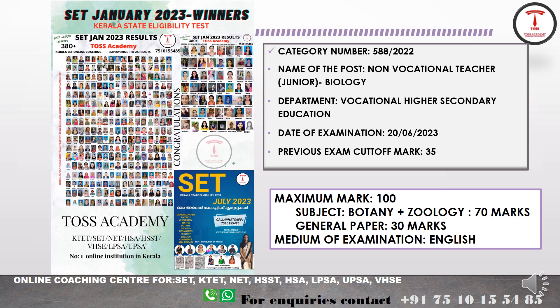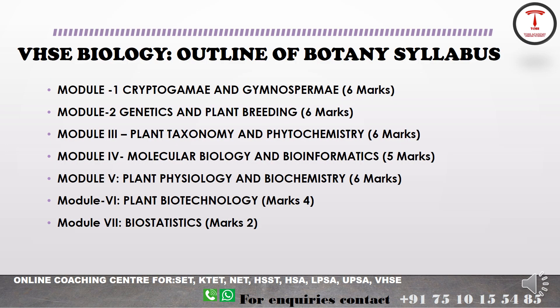Now let us discuss the important topics of the Botany part. The VHSC Biology Syllabus Botany part is divided into modules. Module 1 is Cryptogamae and Gymnospermae. Module 2 is Genetics and Plant Breeding. Module 3 is Plant Taxonomy and Phytochemistry. Module 4 is Molecular Biology and Bioinformatics. Module 5 is Plant Physiology and Biochemistry. Module 6 is Plant Biotechnology and Module 7 is Biostatistics. We will look at the important areas in each module.